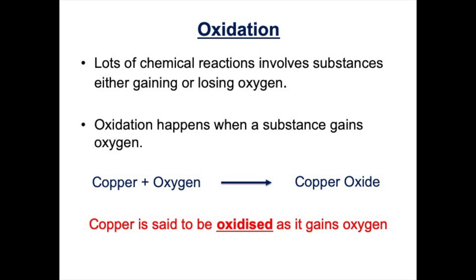Let's start by looking at the meaning of the term oxidation. Lots of chemical reactions involve substances either gaining or losing oxygen. An oxidation reaction happens when a substance gains oxygen. So if you look at the equation here — copper plus oxygen goes to copper oxide — this is an oxidation reaction because a substance has gained oxygen. Copper has gained oxygen and has been oxidised to form copper oxide.